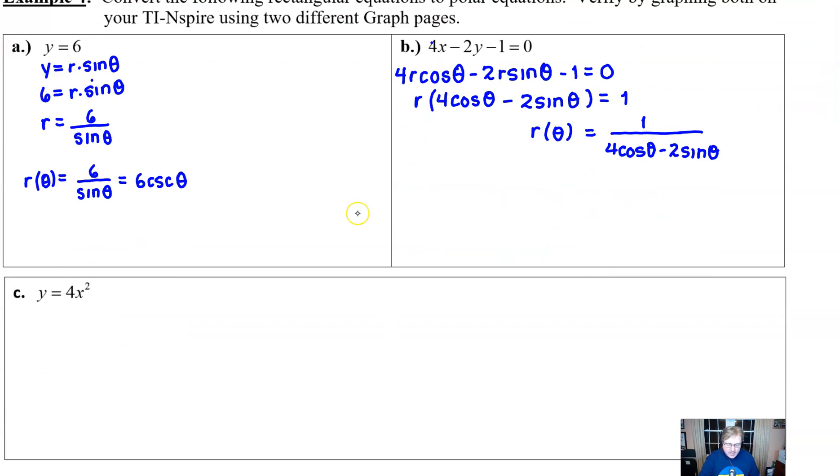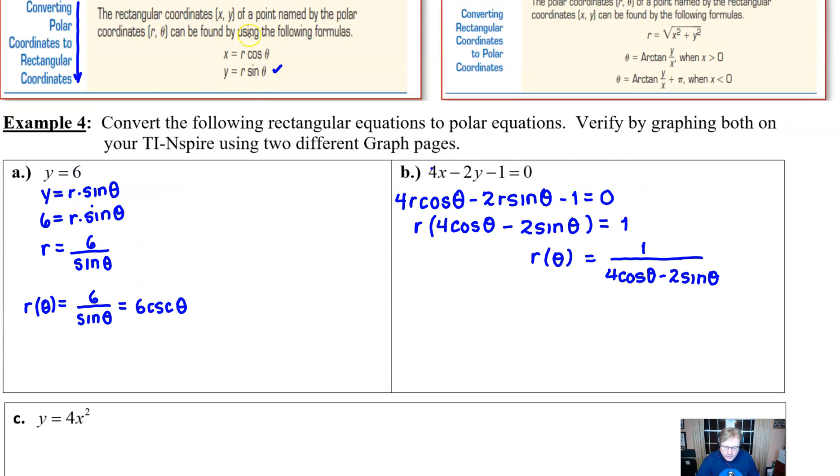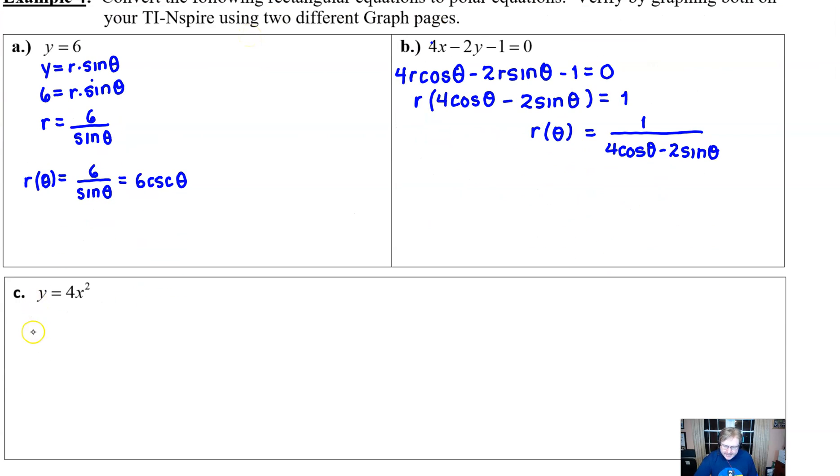And then let's take a look at our third and final one, y equal 4x squared. Well, we all know that that's a parabola. So how we handle this? Well, those same formulas that we've been using have been working pretty well for us, so we don't have to abandon them necessarily. So y is the same as r times the sine of theta. x would be r times the cosine of theta.